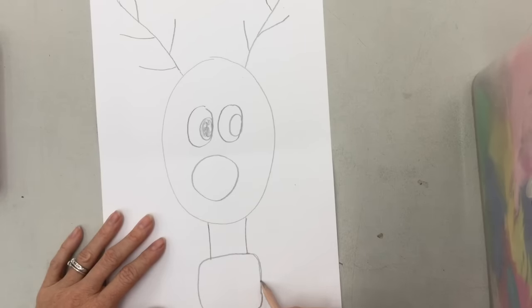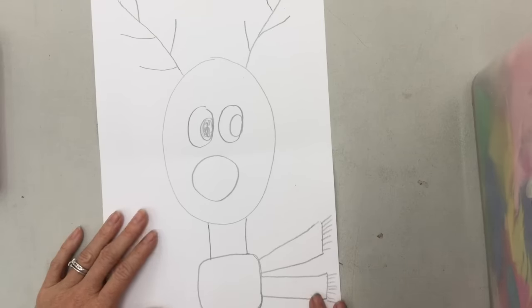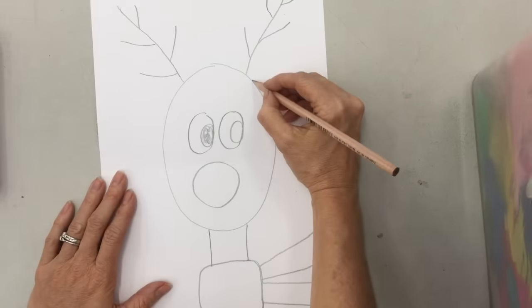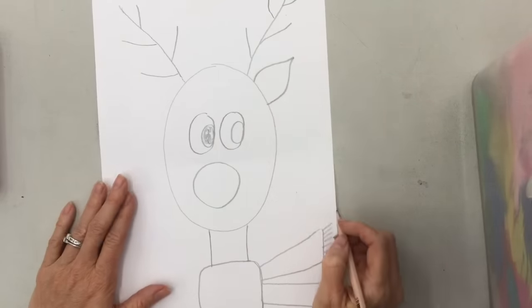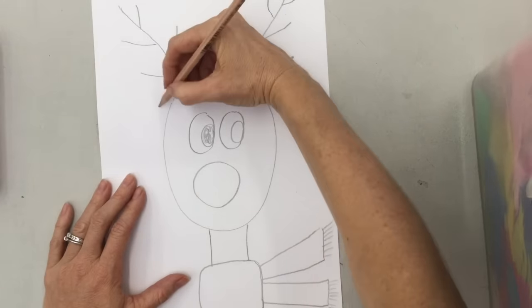And then the scarf, he's got it tied so he's got some bits of the scarf there. And you can add some little dangle things at the end of the scarf.